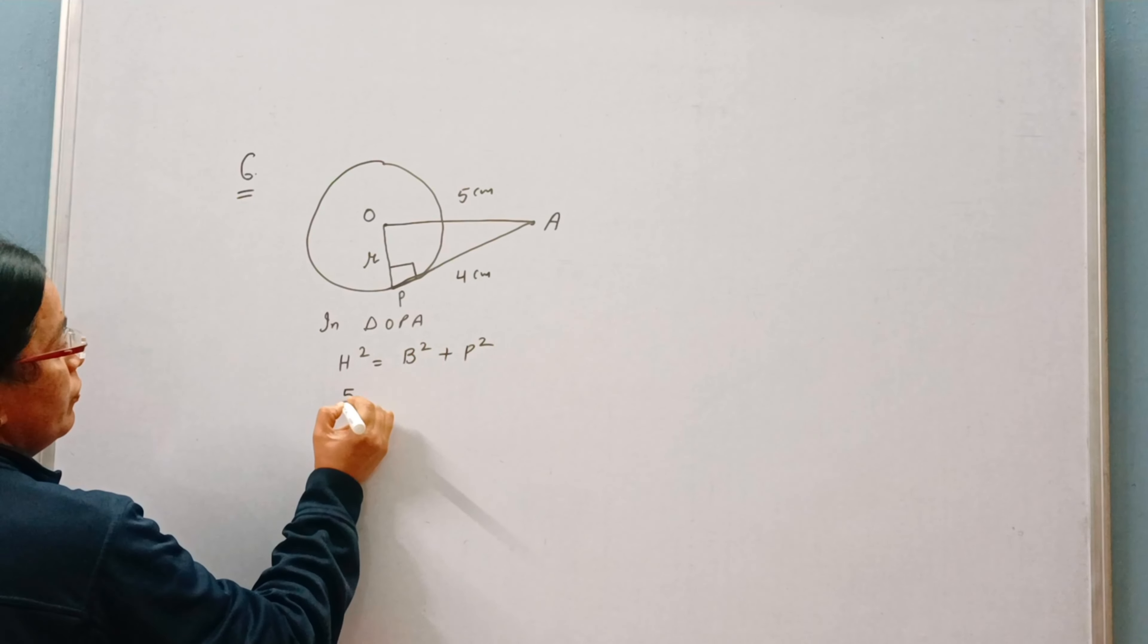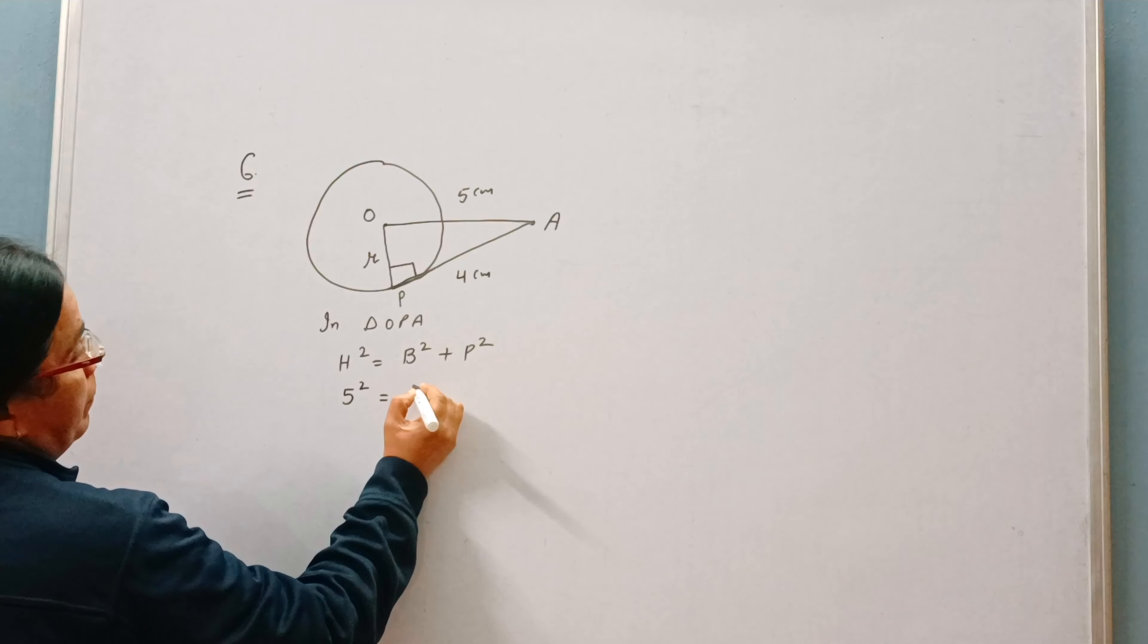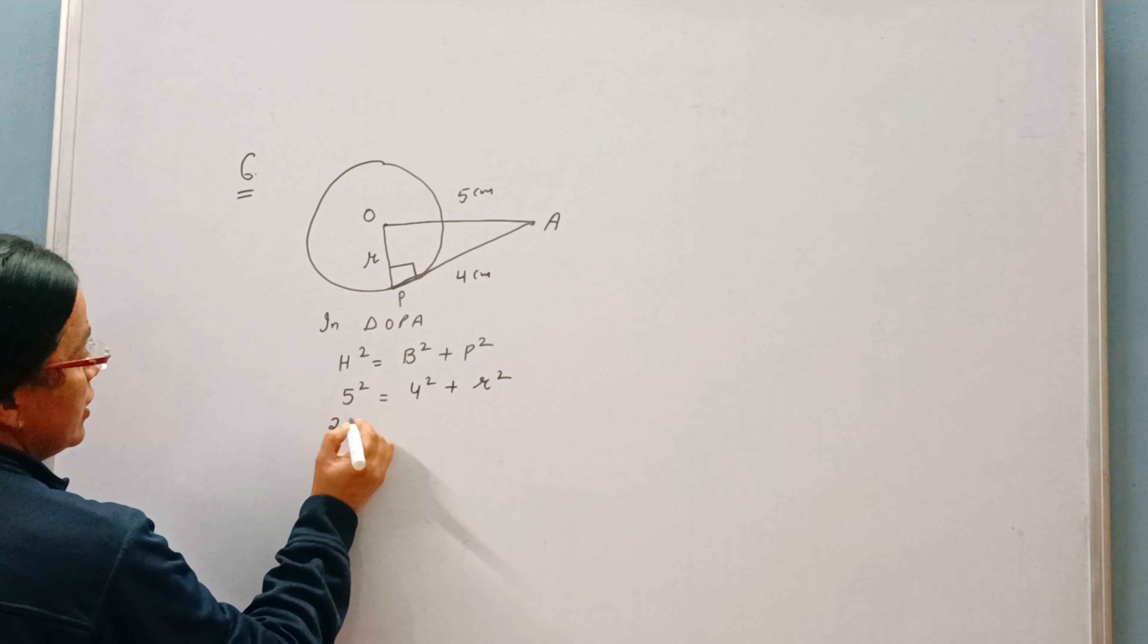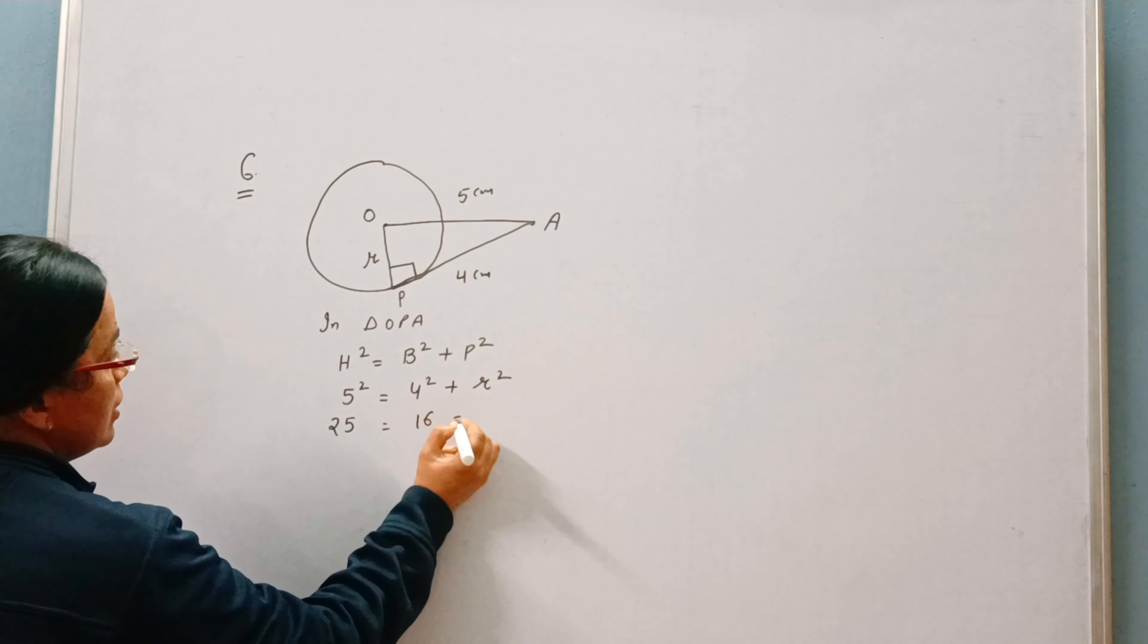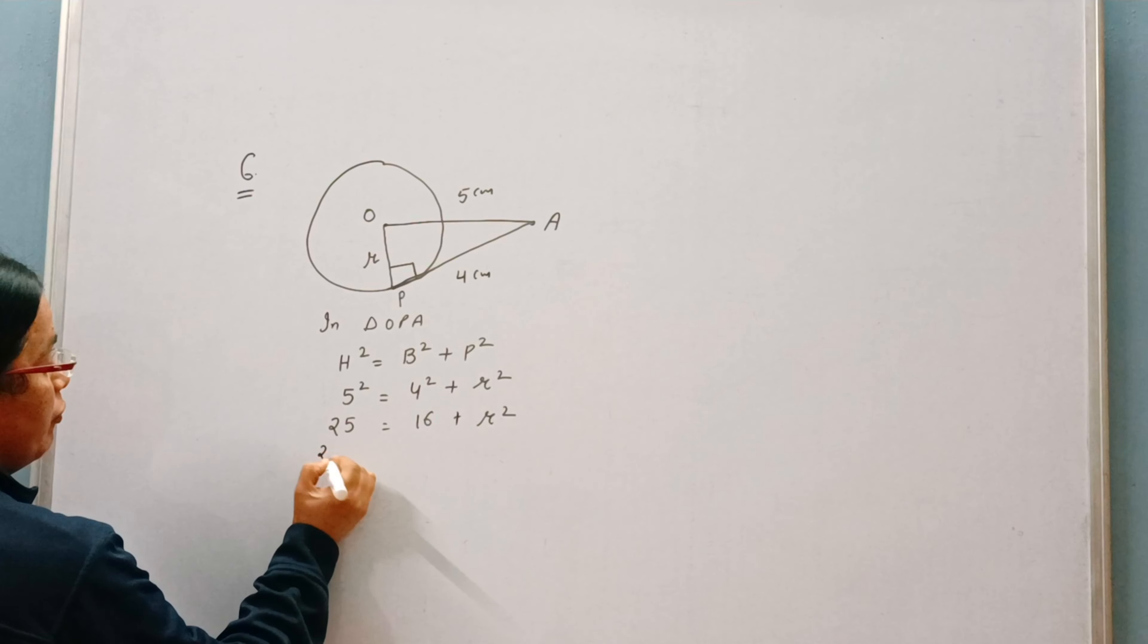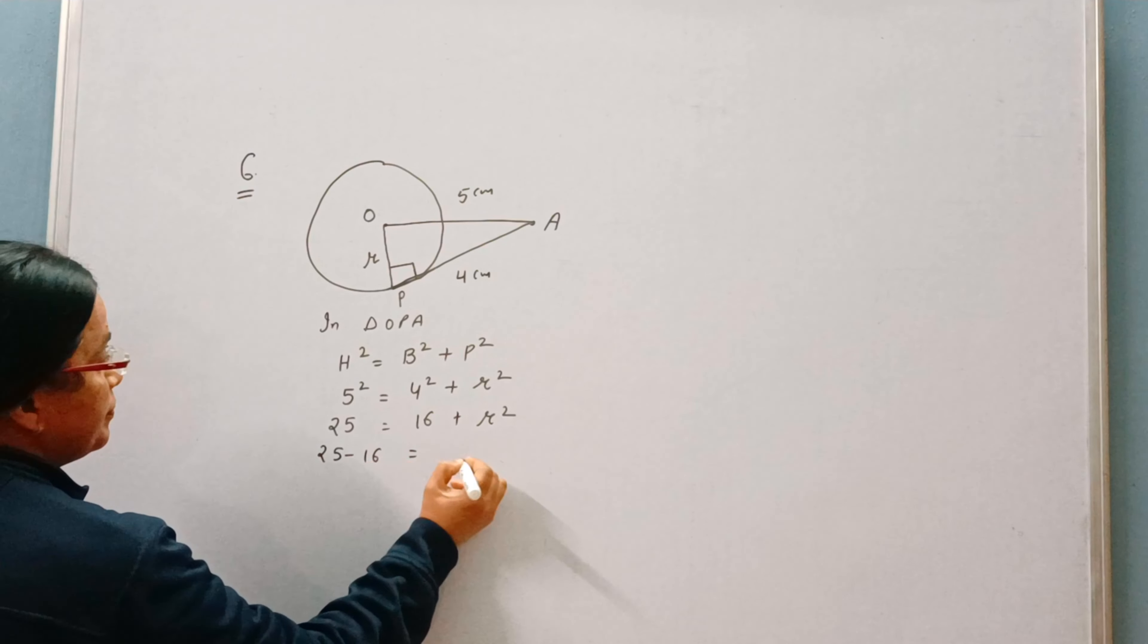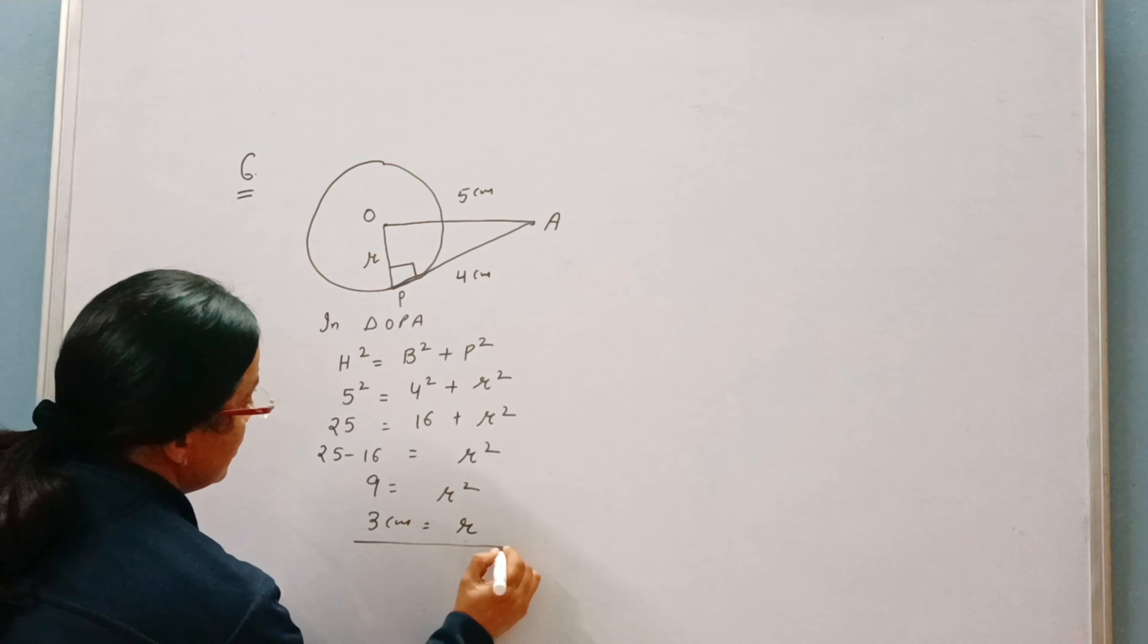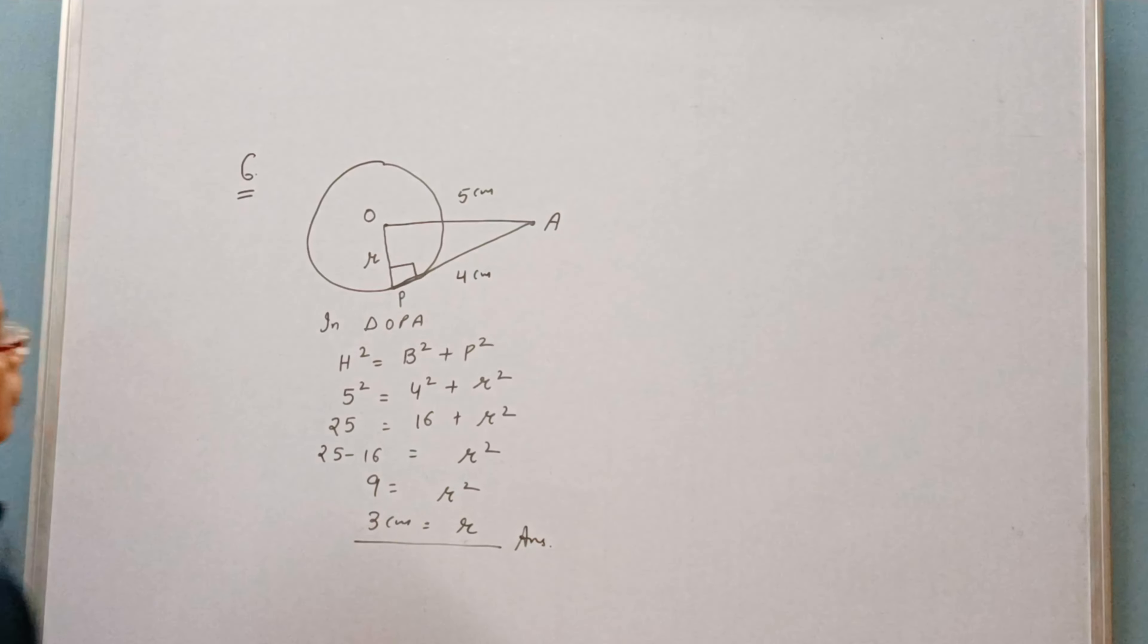So here H is 5, base is 4 and perpendicular is radius. 5 × 5 = 25, 4 × 4 = 16, 25 minus 16 is 9, so R is 3 cm. This is your answer.